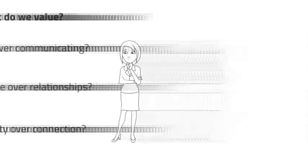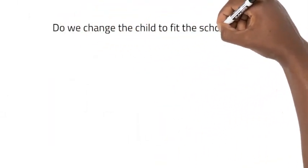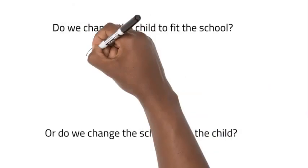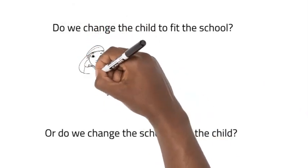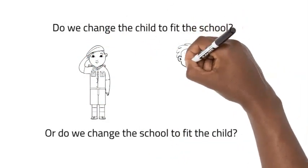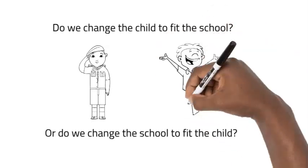Our schools value obedience to the rules over building relationships, and conformity over connection. But does it have to be that way? What if we stopped asking, how do we change the child to fit the school, and started asking, how do we change the school to be a place that all children can succeed?